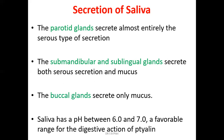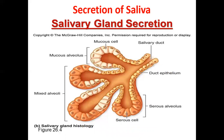The salivary glands contain mucus cells and serous cells. Mucus cells produce mucous secretions and form mucous alveoli. Serous cells form serous alveoli producing serous secretions, which contain a lot of salivary amylase. There are also mixed alveoli containing both serous and mucus cells, producing both types of secretions.